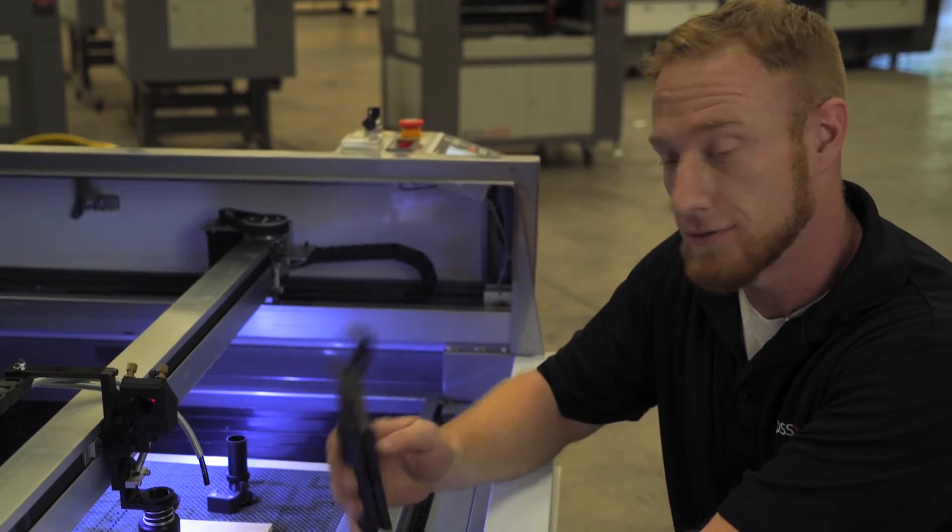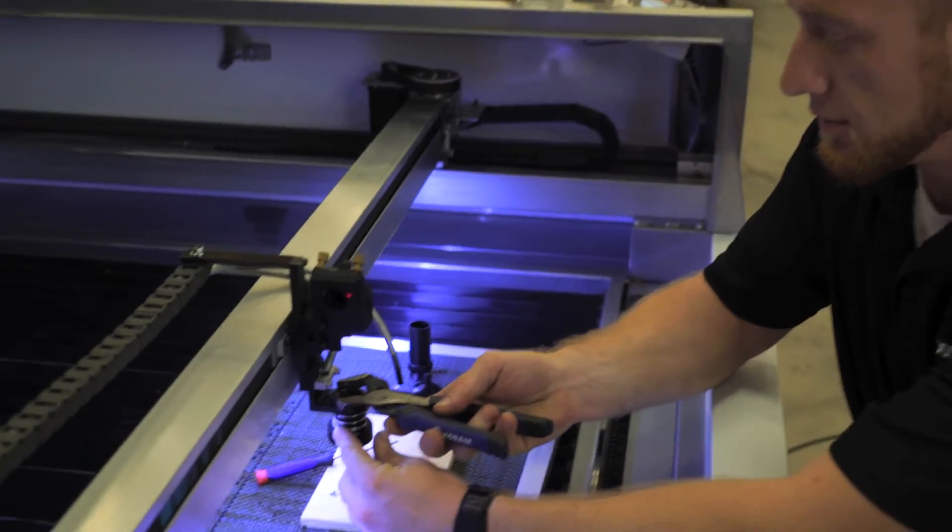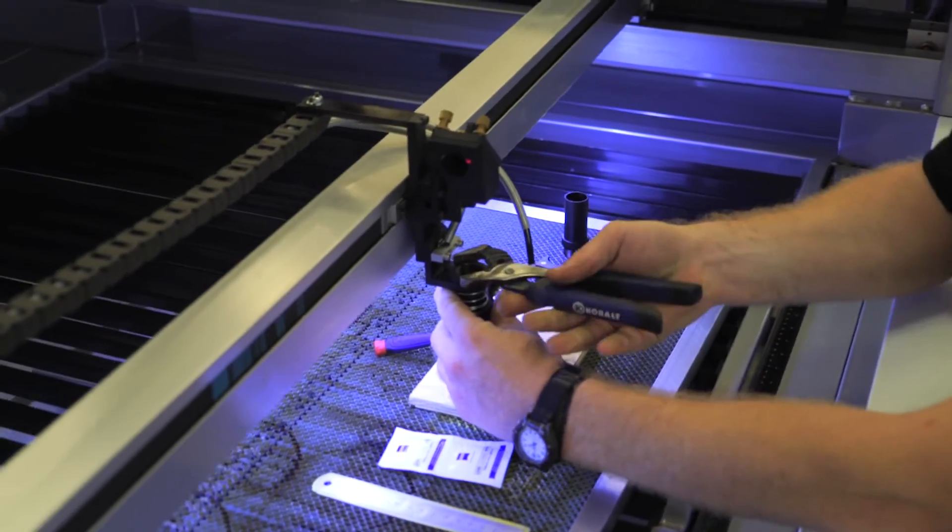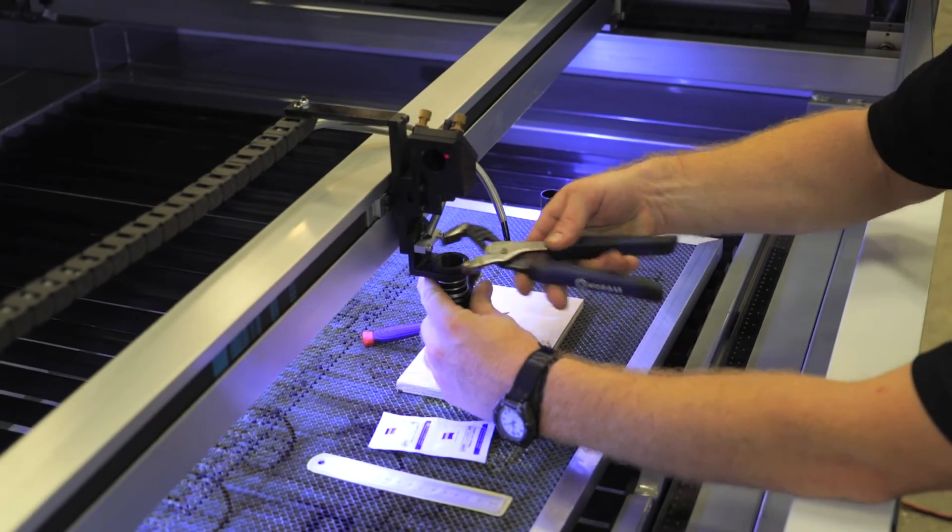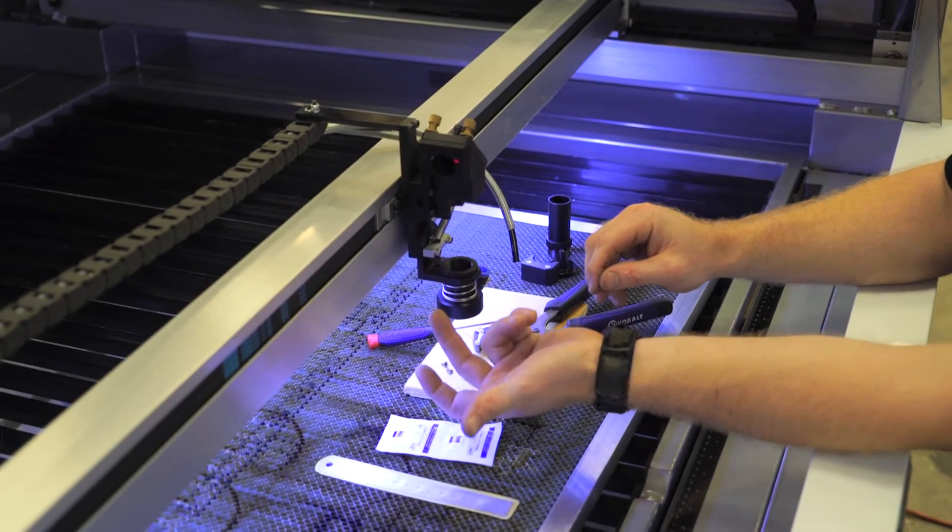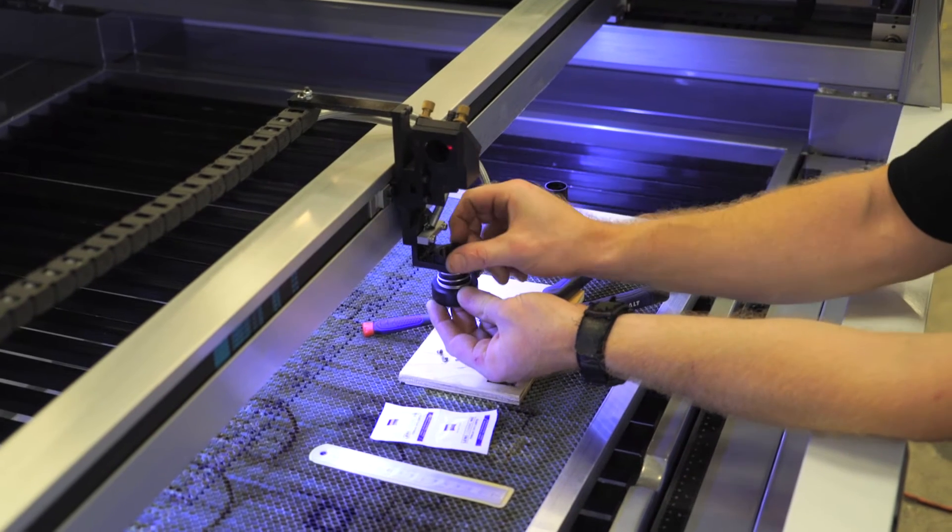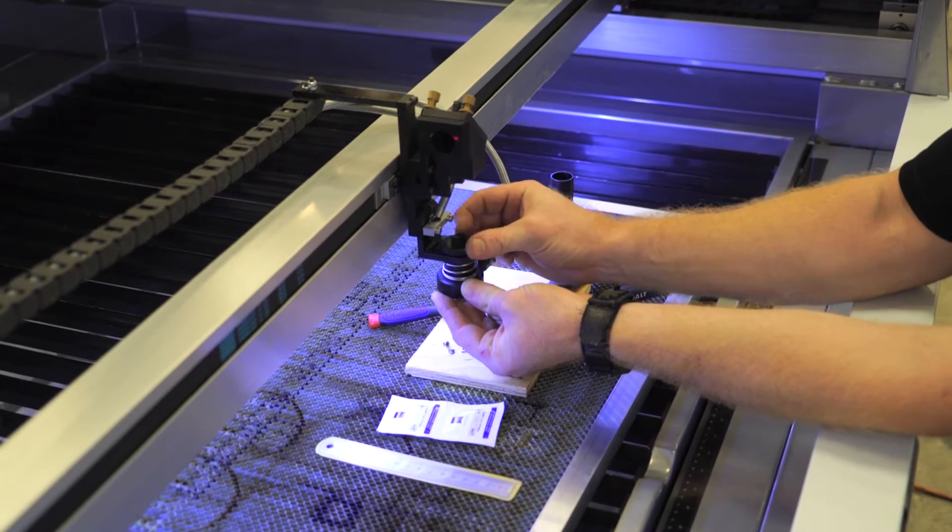Next, take your crescent wrench. Take off the locking nut at the top. With one finger at the bottom, hold the inside. Unscrew it.